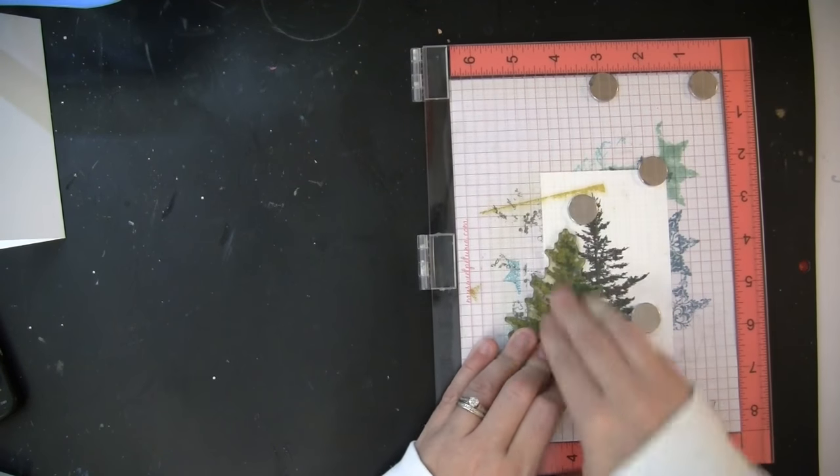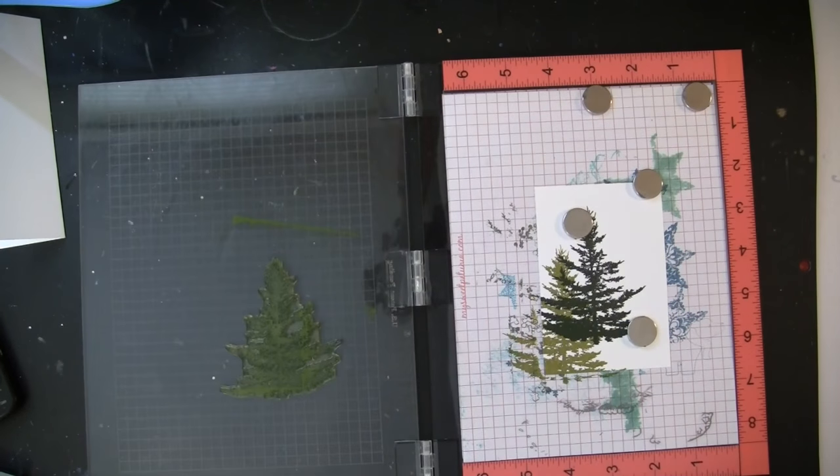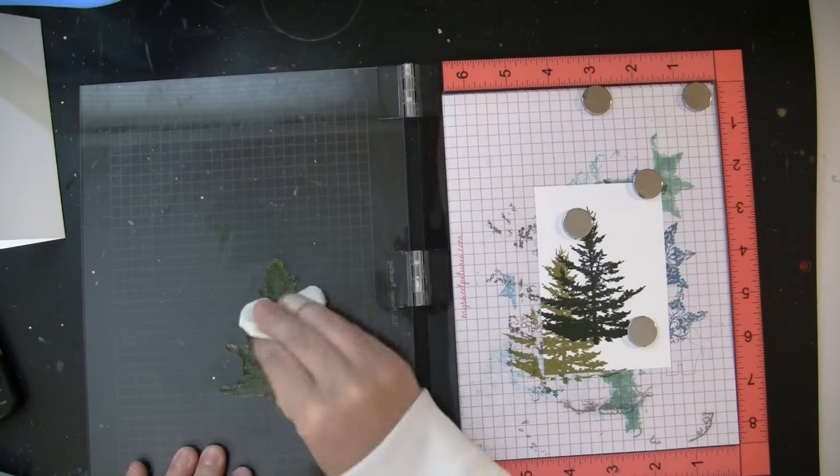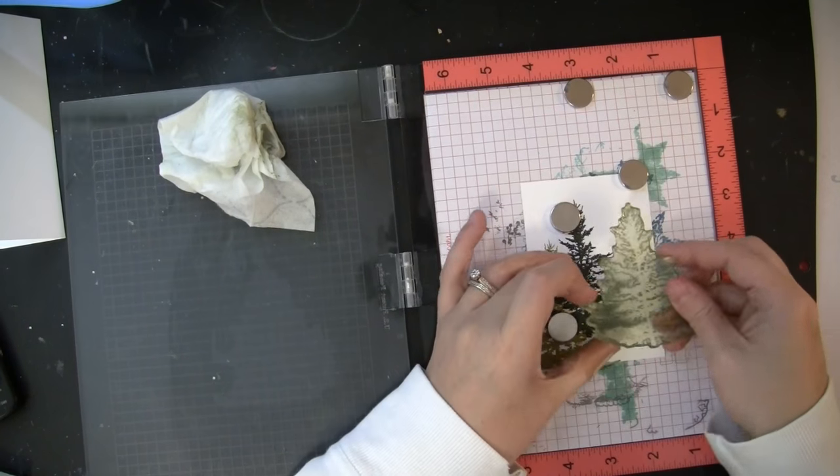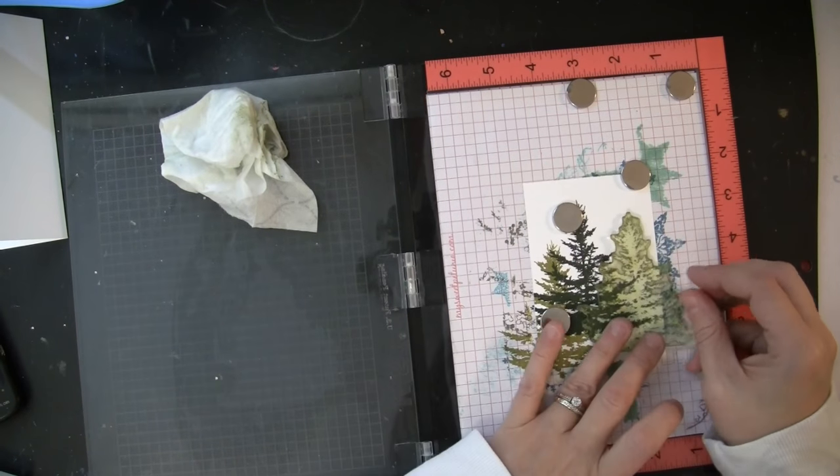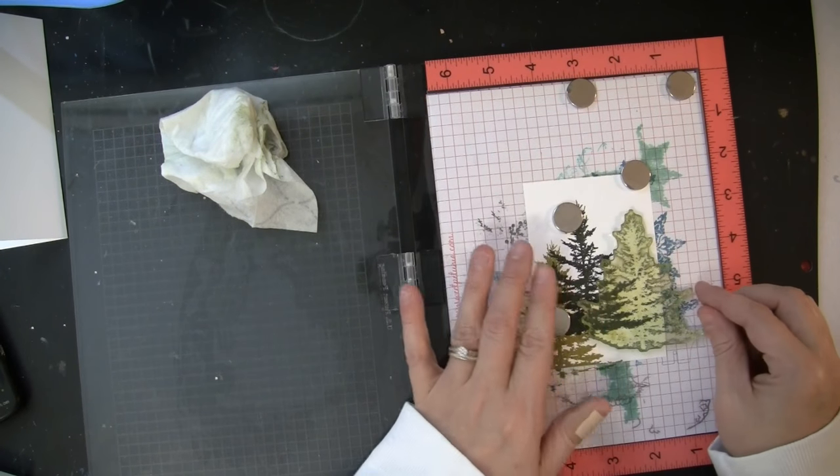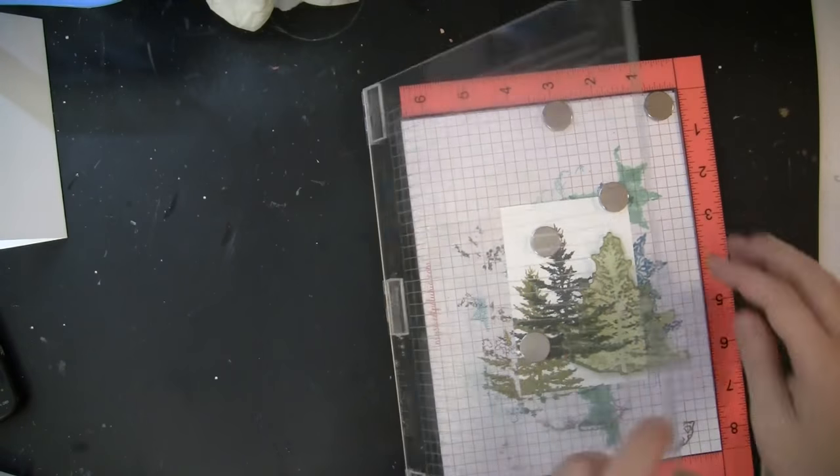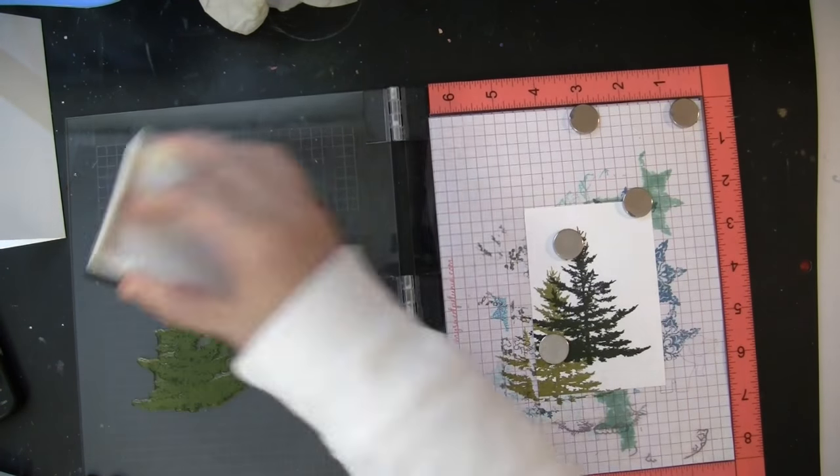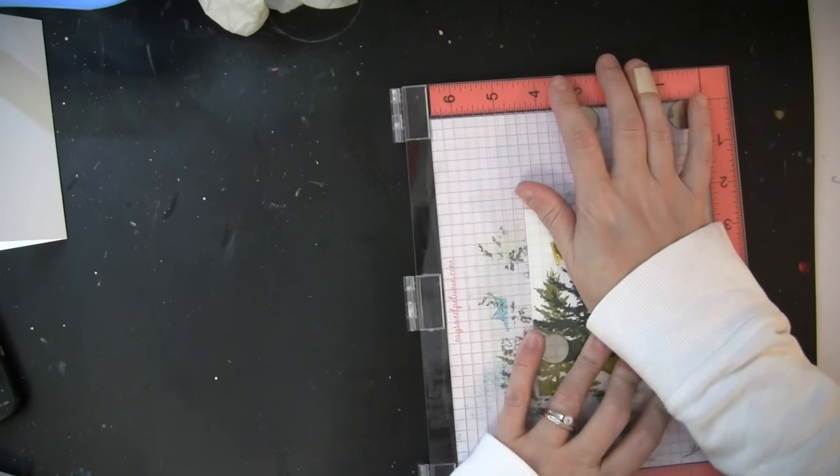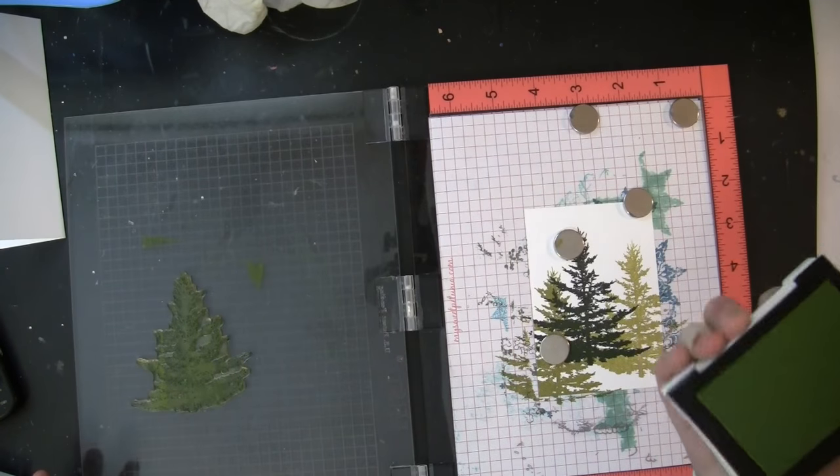Now on that first tree, you can see that it's raised up a little bit higher from the base of the center panel, and that's no big deal. I'm going to be covering that with a little hand-trimmed snowbank, so I'm just looking mostly at the position of the tops of the trees, and I'll get one more tree stamped here. And again, I'm inking this with that lighter color, which is the Spanish Moss VersaFine ink.